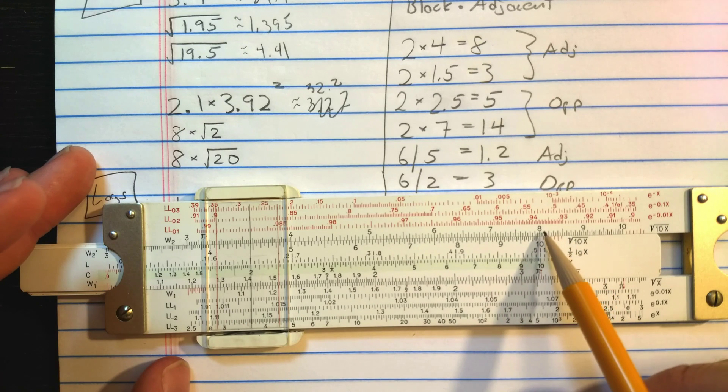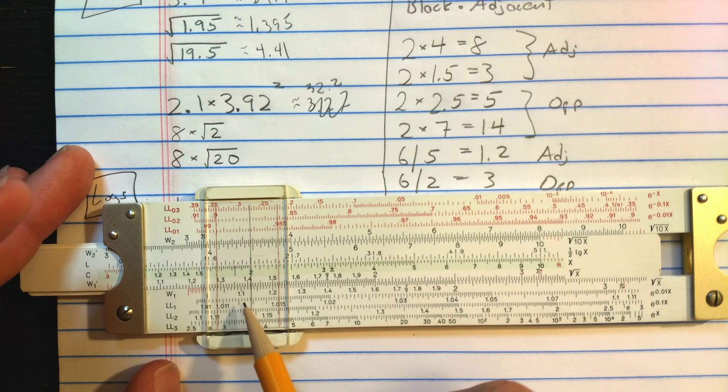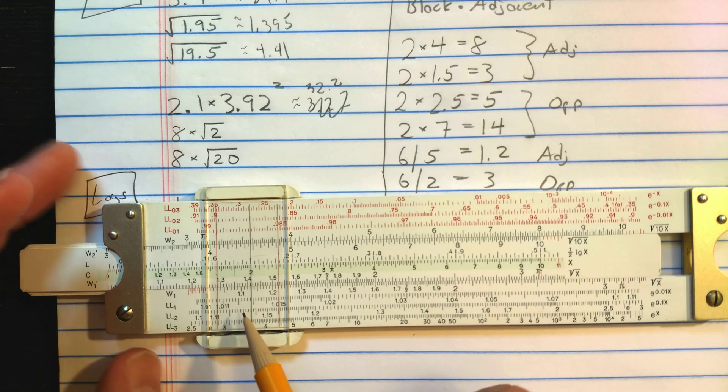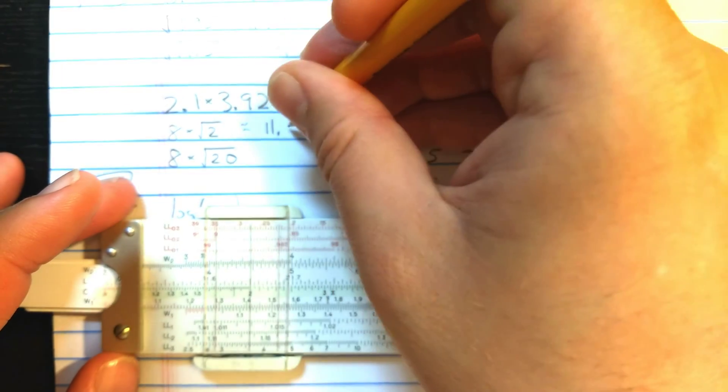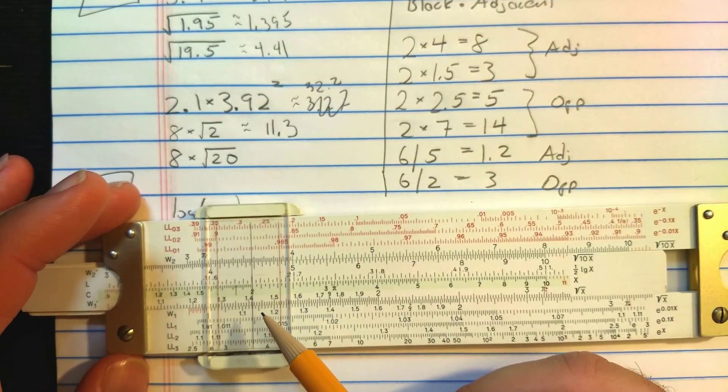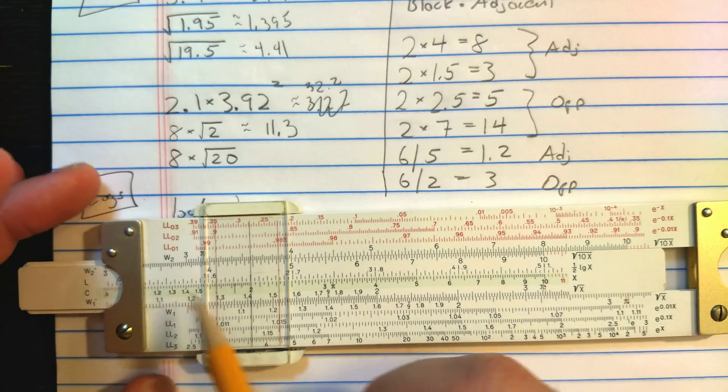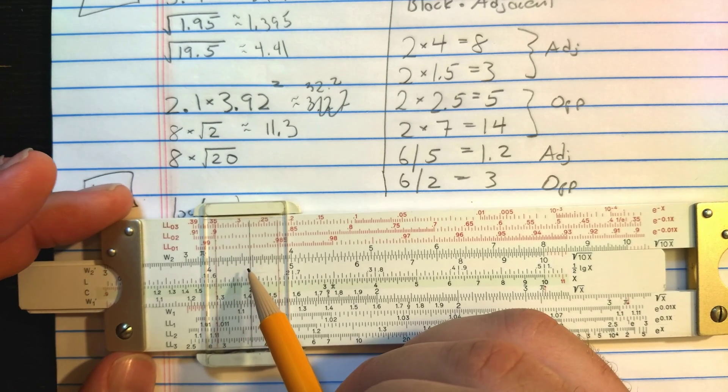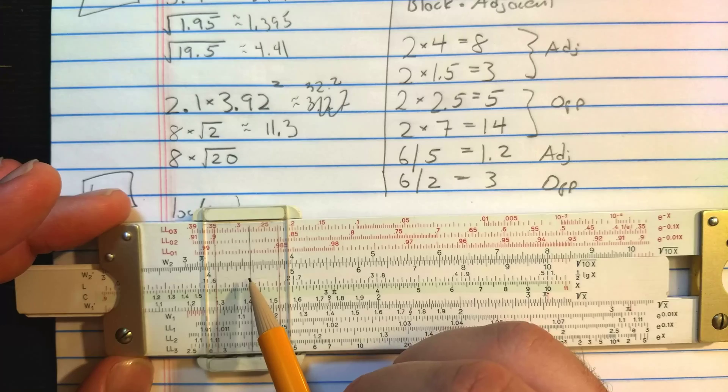Okay, so from the 8, I'm going to the end here, to the end of the W scale, back to the beginning, and then back to about here. So I'm going to read this on W1 as 1, looks like about 1, 1, 3. And that should be 11.3. But if I wanted to multiply by square root 20, I would go through another copy of the C scale, and I'm going to end up on W2 and read that as 35, looks like 358. 35.8.